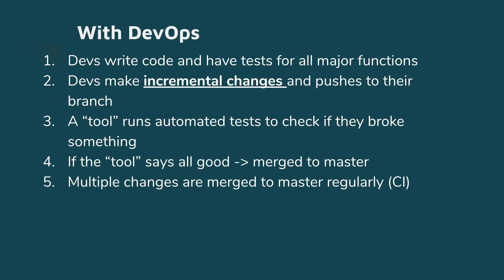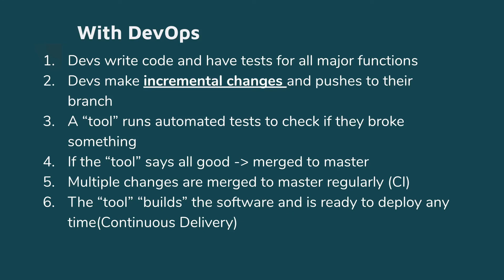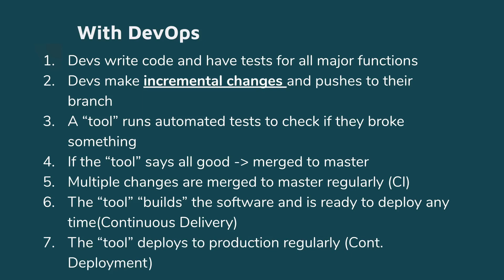If the tool gives the green signal, the pull request gets merged to the master branch. Multiple changes are merged to the master branch regularly — this is what we call continuous integration. Once the change is merged, another tool builds the software — compiling the application, building a binary, or similar. This artifact is ready to deploy at any time. This is what we call continuous delivery, because we are ready to deploy at any moment. If we take one step further and deploy it automatically to production, we call it continuous deployment.